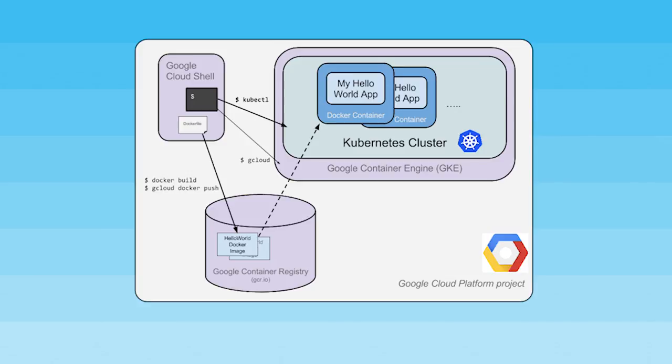The goal of this hands-on lab is for you to turn code that you have developed into a replicated application running on Kubernetes, which is running on Kubernetes Engine. For this lab, the code will be a simple Hello World Node.js app. Here's a diagram of the various parts in play in this lab to help you understand how the pieces fit together. Use this as a reference as you progress through the lab — it should all make sense by the time you get to the end.